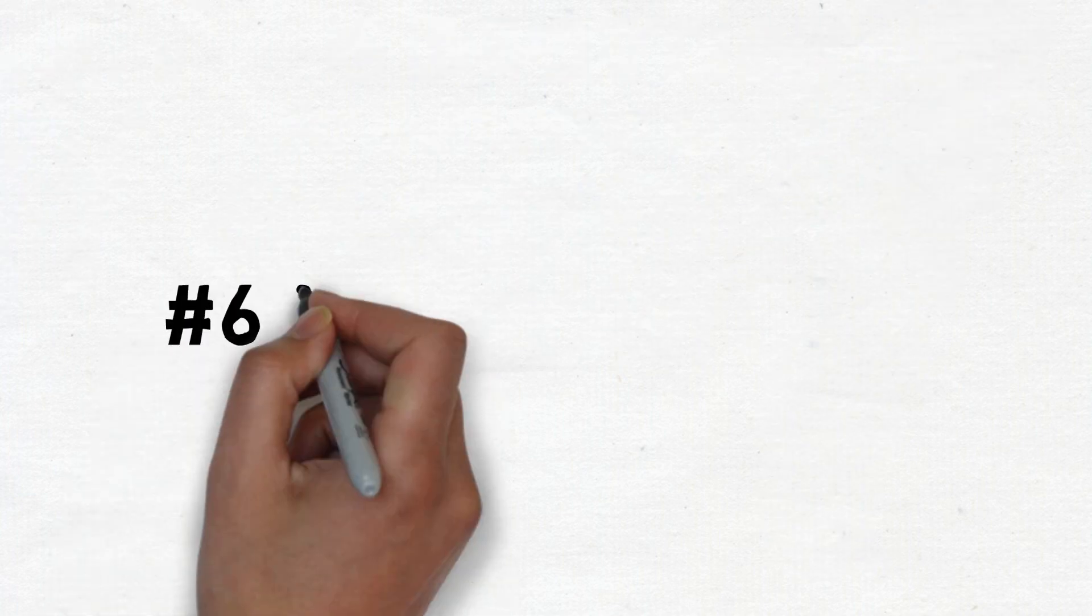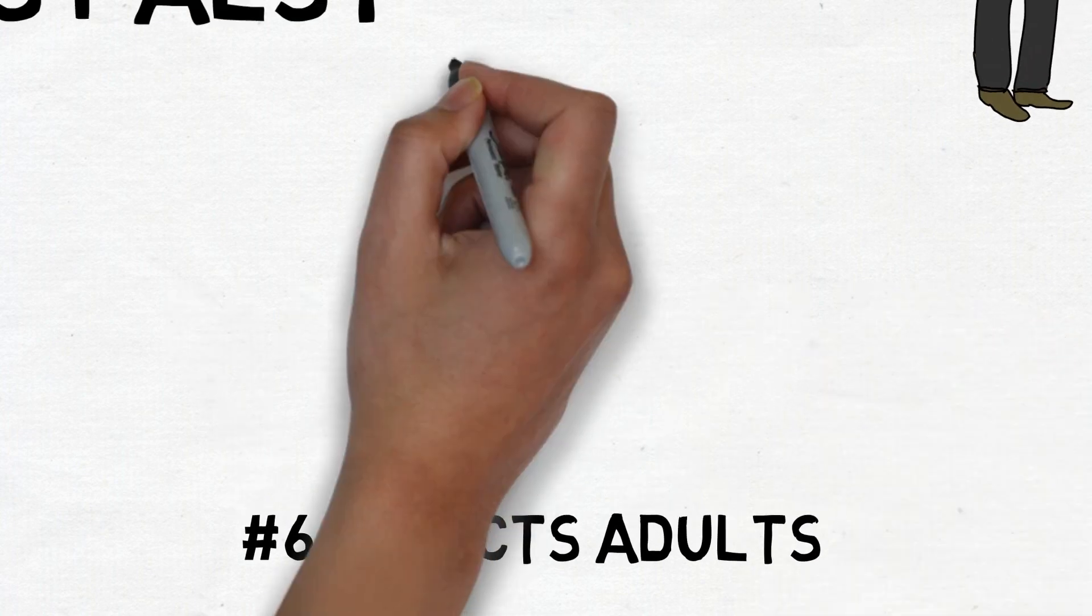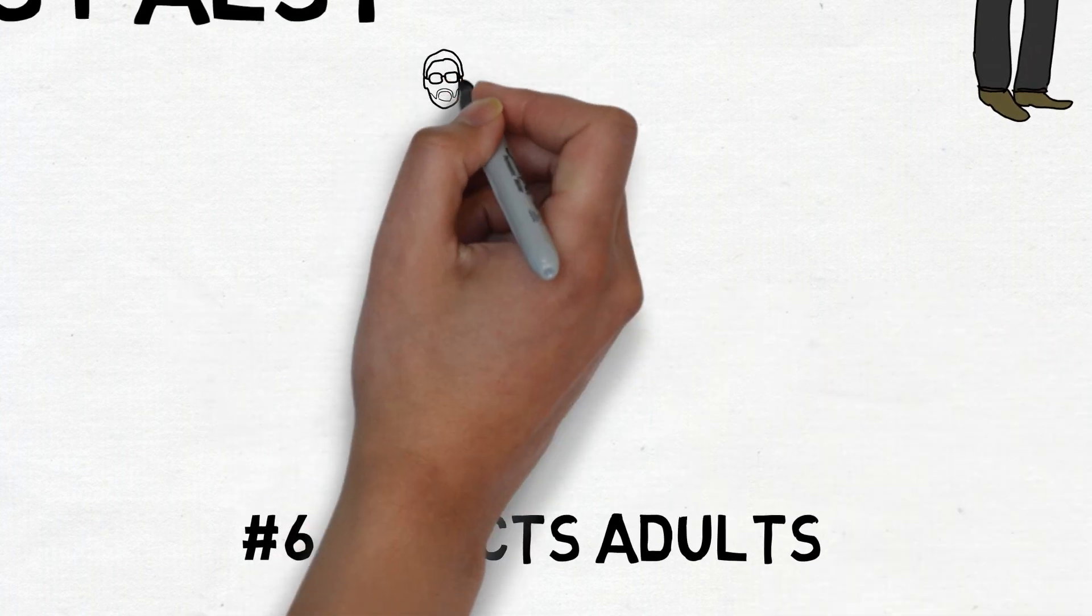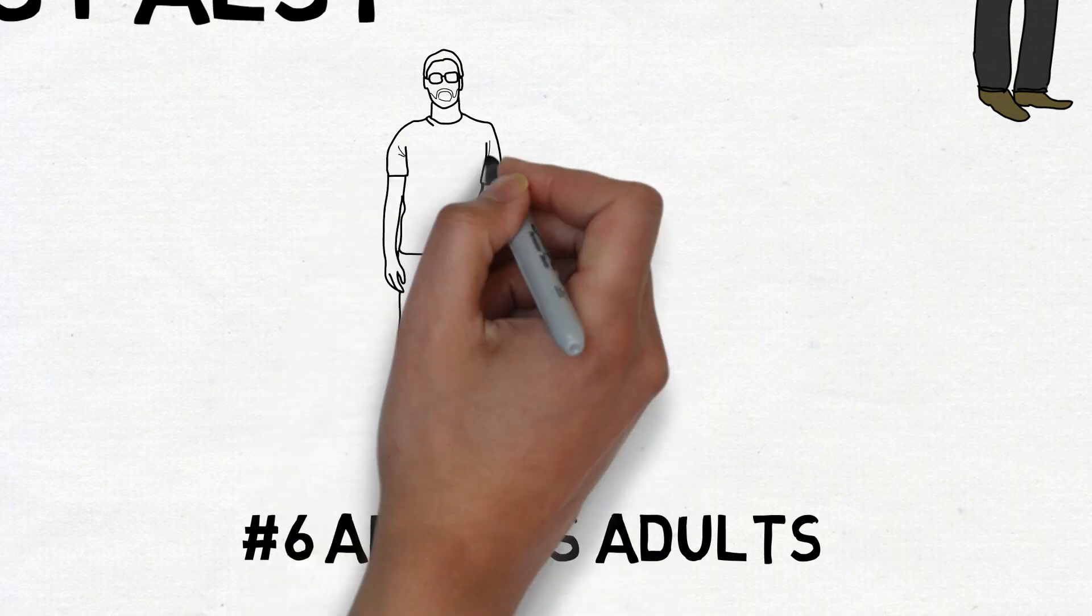Number 6. Most Bell's Palsy sufferers are adults. That doesn't mean that children are immune from it, and many cases of children have been reported. Such cases, however, are rare, and the majority of patients develop Bell's Palsy between the ages of 20 and 30.